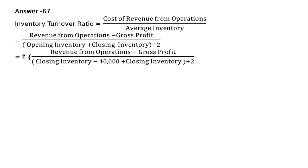That is revenue from operations minus gross profit, whole divided by — since closing inventory is more than opening inventory by Rs. 40,000, in place of opening inventory you have to write closing inventory minus Rs. 40,000. Then you will get opening inventory plus closing inventory, whole divided by 2.